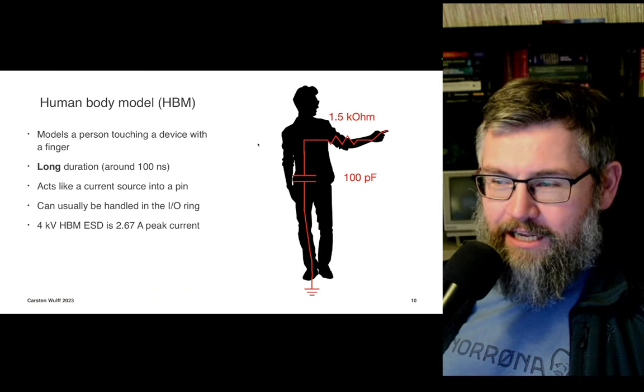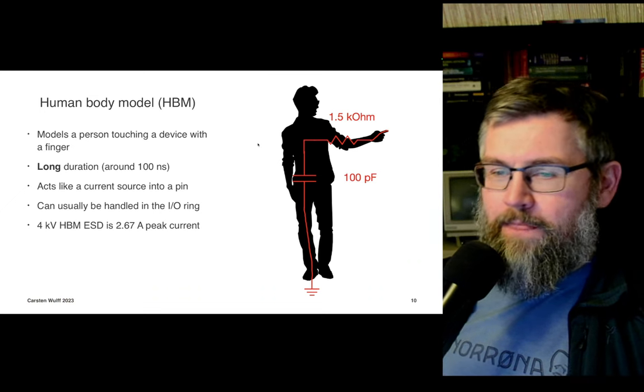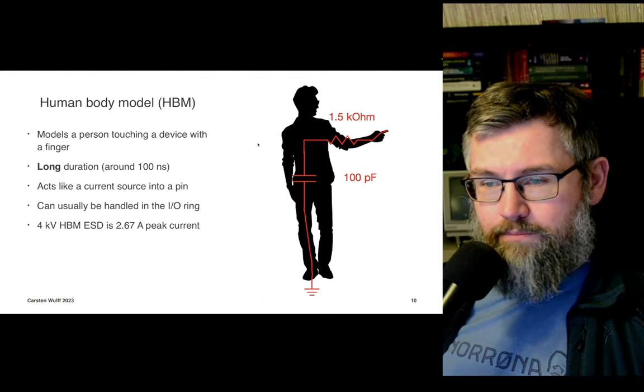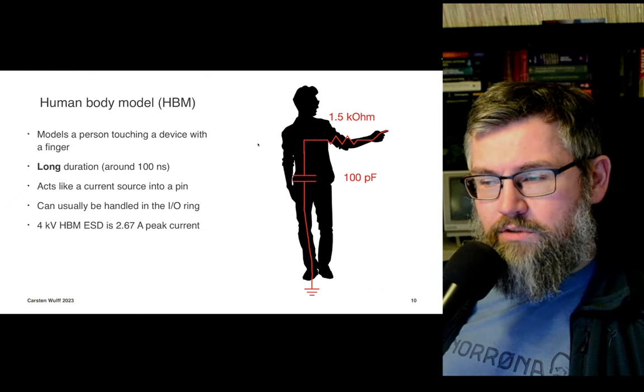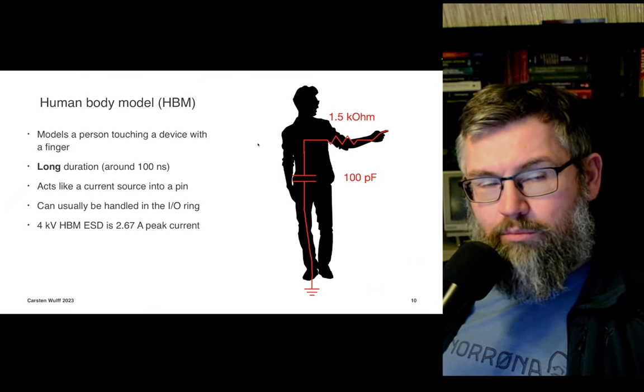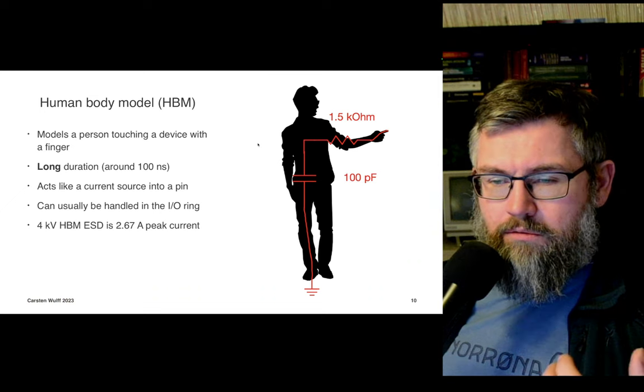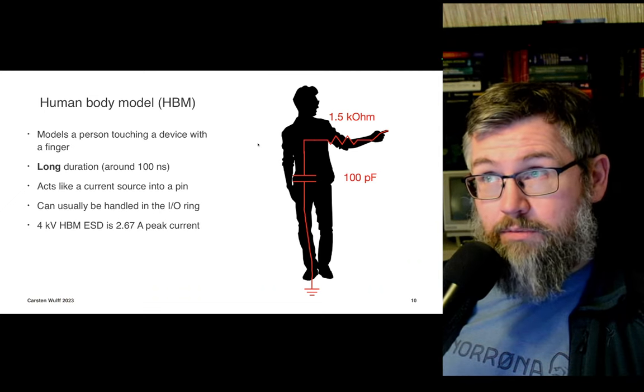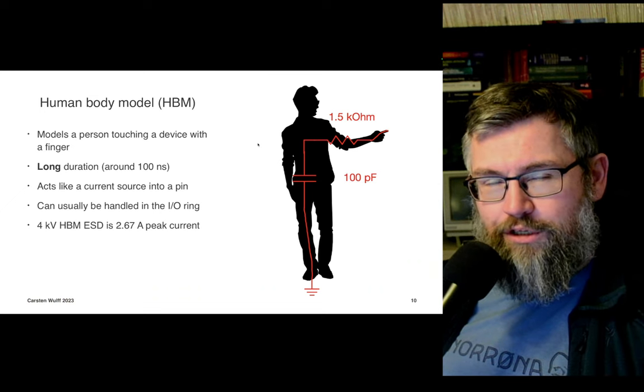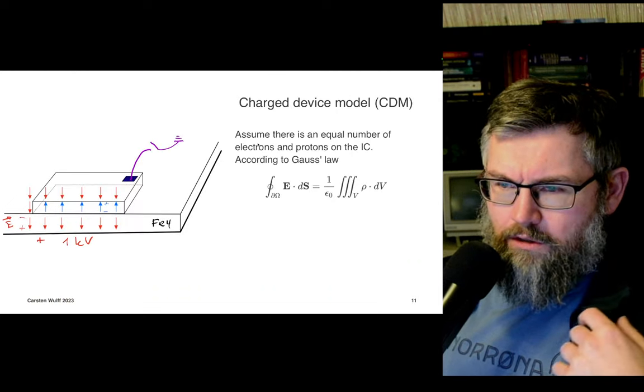This is me modeled by a 100 pF capacitor and an assumption that it's 1.5 kilo ohm from that capacitor to my finger. I could be charged to a very high voltage, maybe 4 kilovolts. When I touch something, that's similar to discharging that capacitor through that resistor. At 4 kilovolt on that capacitor, that will turn into about 2.67 amps. 4 kilovolt may be a typical spec for an IC. The human body model ESD event is like a current source pushing a current into our chip. There's quite a longer duration, about 100 nanoseconds. Our chip has to handle it somehow.